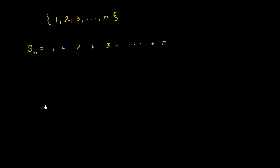Well, we're going to do a neat little trick here, where I'm going to rewrite this sum. So I'll write it again as s sub n. But now I'm just going to write it in reverse order. I'm going to write it as n plus n minus one, plus n minus two, all the way to one.